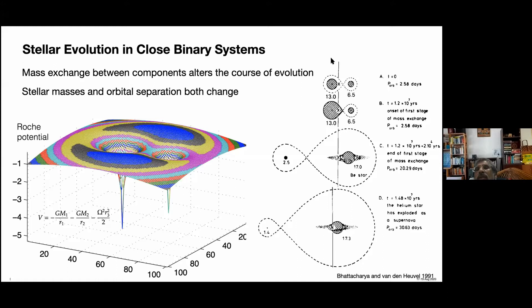Here is an example: two stars of 13 and 6.5 solar mass, a mass ratio of two. Initially they evolve separately, but the 13 solar mass star eventually fills its Roche lobe and mass transfer begins — the entire envelope transfers to the companion, leaving the nuclear burning core: a 2.5 solar mass helium core. Because the core and envelope evolution are decoupled at advanced stages — the core becomes denser, the envelope more distended — even removing the envelope doesn't greatly alter the core's evolutionary course.